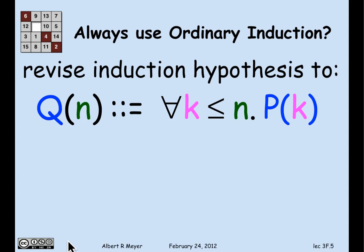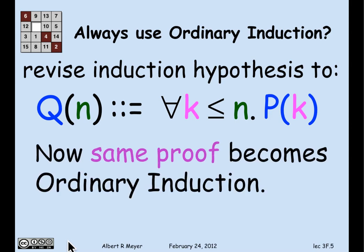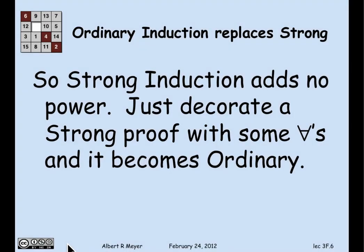If you think about it for a moment, just revising the induction hypothesis to include that universal quantifier — for all k less than or equal to n — means that the strong induction on P of k becomes an ordinary induction on Q of n. With a trivial change, decorating a bunch of occurrences of formulas with 'for all's, we have converted a strong induction into an ordinary induction. So we see that strong induction adds no power beyond ordinary induction — it just lets you omit a bunch of universal quantifiers that would otherwise have to be made explicit.